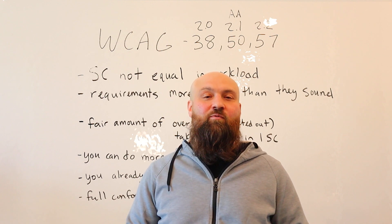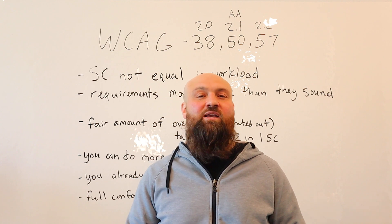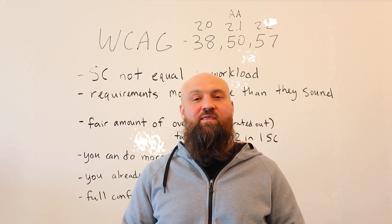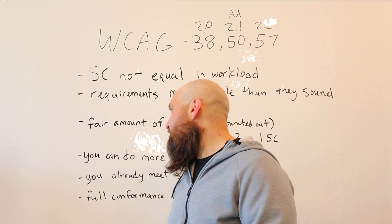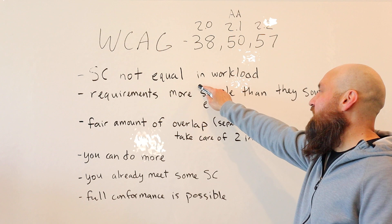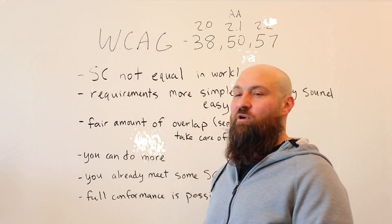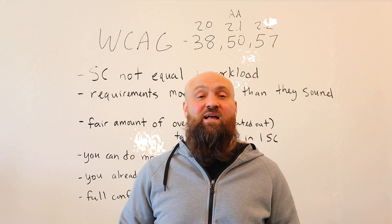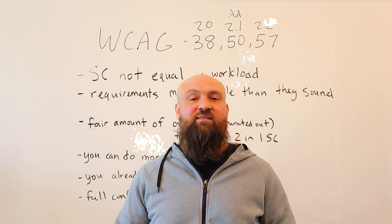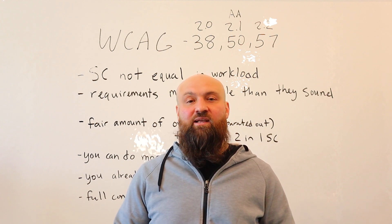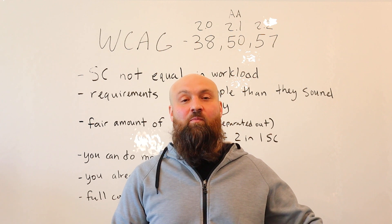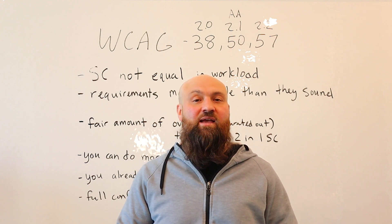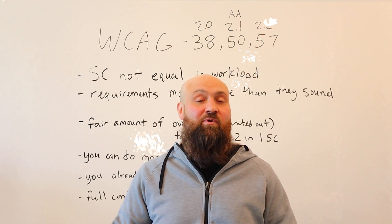So in 2.1, for example, there are 56 different considerations we need to account for to make sure our websites are accessible under that conformance level. One important thing to know is that the different success criteria are not equal in workload. If I say 56 success criteria, that sounds like a lot of boxes to check, but some of these success criteria are very easy to address — there are probably five to ten that we can immediately check off.